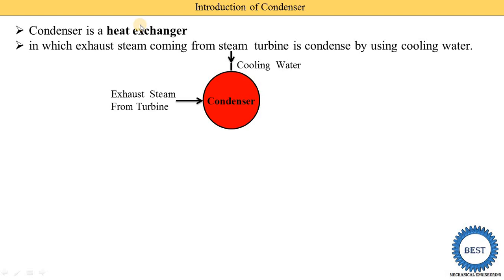In these condensers there are two possibilities: the exhaust steam from the turbine and the cooling water are mixed — this is called direct contact type heat exchanger — or there is indirect contact type. In indirect type, a pipe is used; cooling water is supplied through the pipe and steam passes from outside. When heat exchange takes place, steam is converted into water called condensate, and the temperature of cooling water increases and is further supplied to the cooling tower.